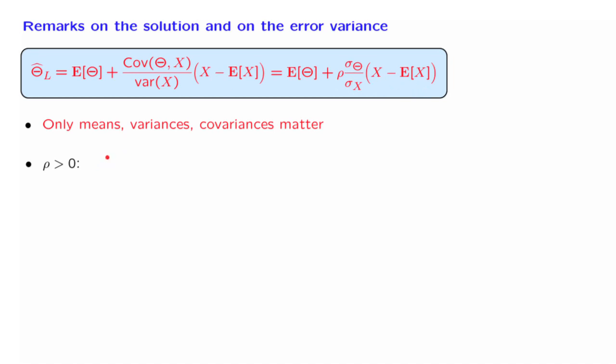In particular, if it happens that we see an observation that's larger than expected, in that case, our estimate is going to be above the expected value of theta.